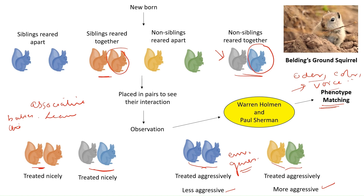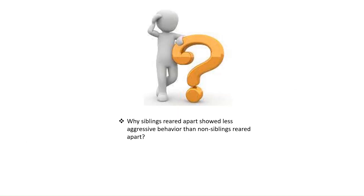This proves how animals discriminate other animals through kin discrimination and what we mean by associative learning. Now a question from my end: why did siblings reared apart show less aggressive behavior than non-siblings reared apart? Do let me know in the comment section.